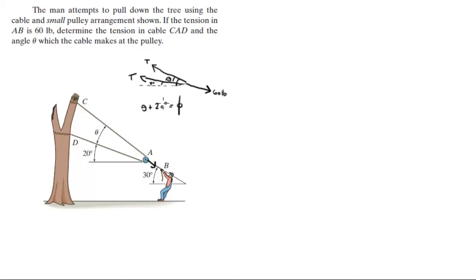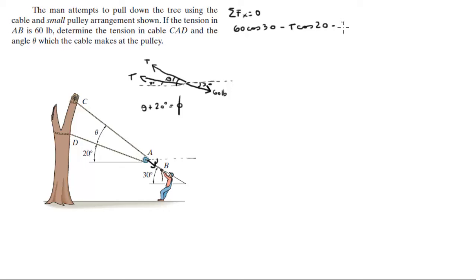The sum of the forces in X is equal to zero. So 60 cosine of 30 — because if that angle is 30, this is also 30, which means this is also 30 — so we have 60 cosine of 30 minus the tension cosine of 20 minus the tension cosine of phi is equal to zero.